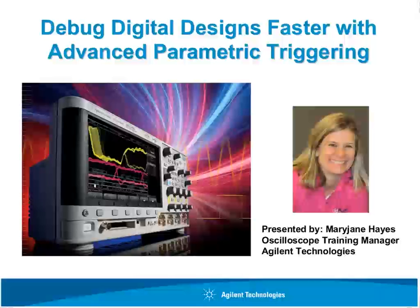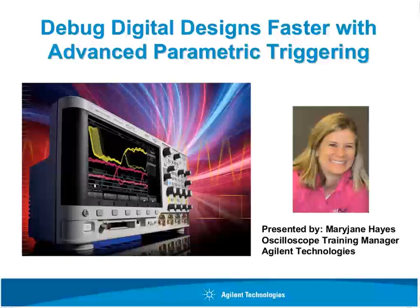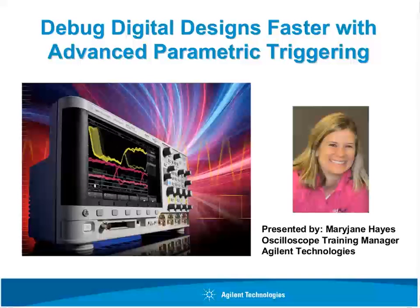Although fast waveform update rates can often reveal signal integrity problems, capturing intermittent parametric circuit problems while using a scope's standard edge triggering mode is really still based on statistical odds. Advanced parametric triggering can help synchronize oscilloscope acquisitions and display known complex signal activity. This type of triggering can also be used to test for signal parametric violation conditions such as setup and hold time, edge speed, pulse amplitude violations, and pulse width violations. Agilent's new DSO and MSO 3000X series InfiniVision oscilloscopes come standard with a variety of advanced parametric triggering and search and navigation capabilities.